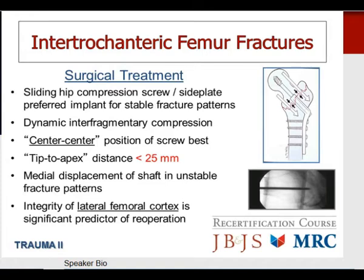The sliding hip compression screw and side plate remains the preferred implant for stable fracture patterns, allowing dynamic interfragmentary compression through sliding of the lag screw within the barrel of the side plate. For positioning of the proximal lag screw, the center-center position is best — centered on both the AP and lateral images, with the screw tip close to the subchondral bone. The tip-to-apex distance should be less than 25 millimeters; if achieved, the risk of screw cutout is essentially zero. With unstable fracture patterns, this construct can lead to significant medial displacement of the femoral shaft. The integrity of the lateral femoral cortex is a significant predictor of re-operation.